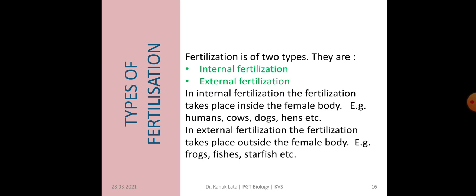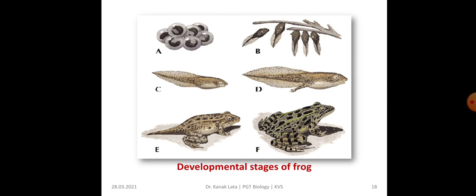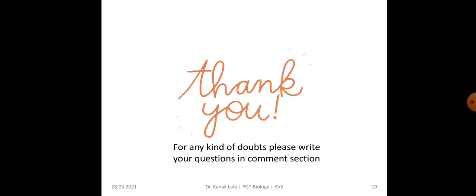In external fertilization, both male and female individuals release their gametes into the surrounding environment, particularly in the water, and there the fertilization takes place outside the female body. Here you can see the release of gametes in frogs, eggs of frogs, and the developmental stages of the frog. Thank you. For any doubts, please write your question in the comment section.